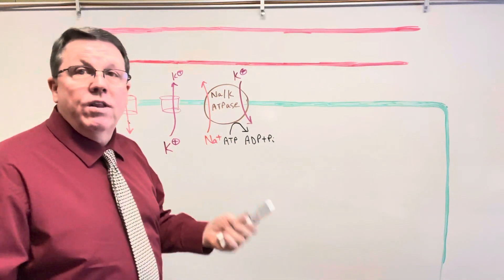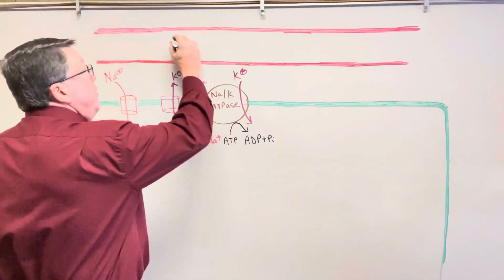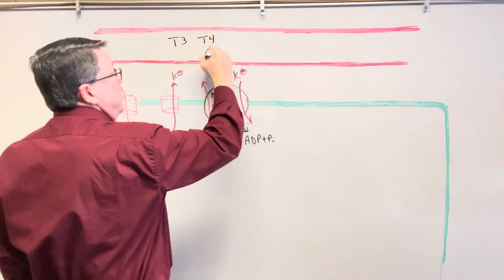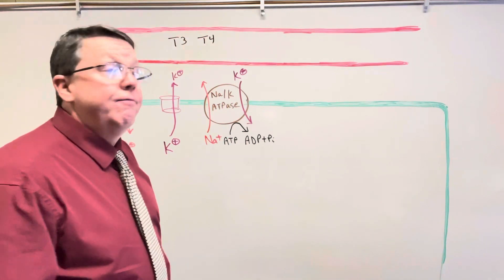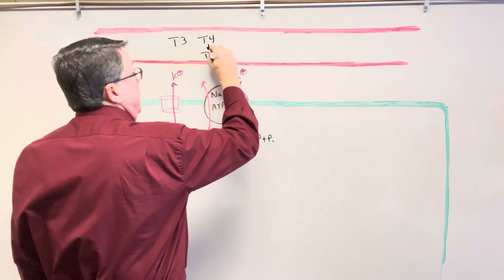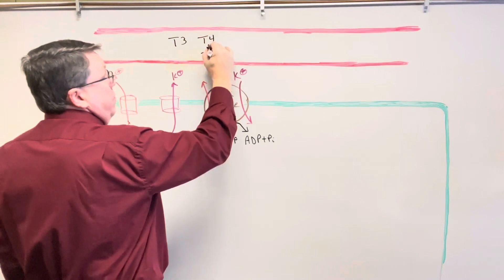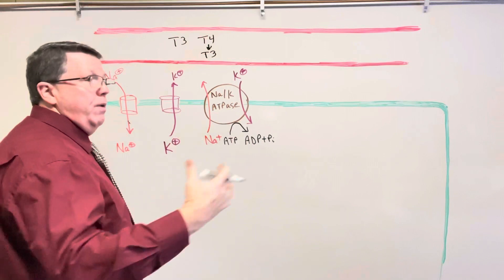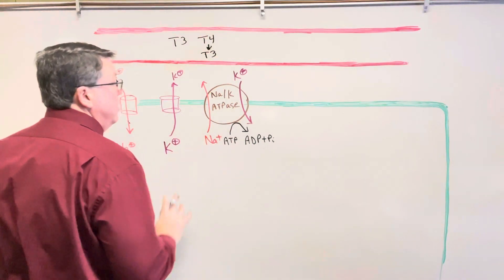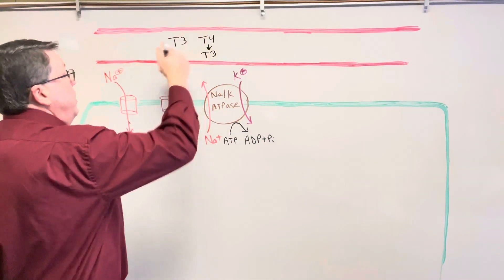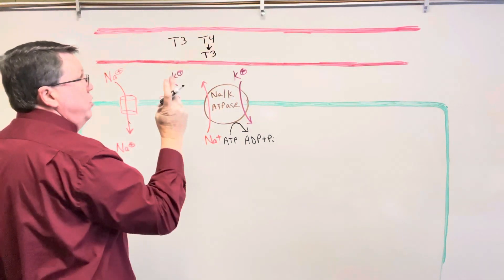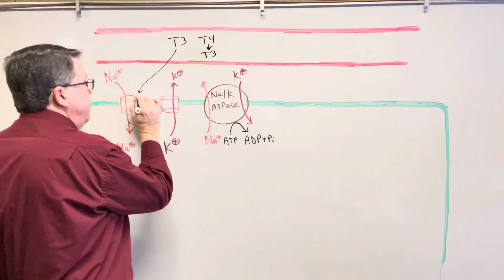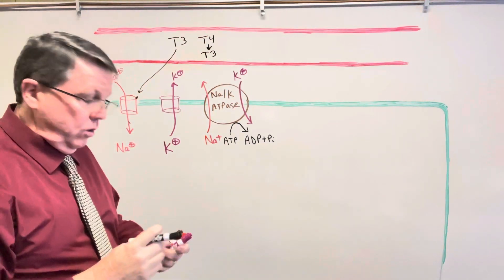Now let's talk about what thyroid hormone does. Thyroid hormone can be in two forms: we have T3 and basically the inactive form, which is T4. A lot of the T4 is going to be converted to T3 in the bloodstream. Whatever is not converted in the bloodstream is going to come down into the cell and then be converted to T3, or bond with a protein until it's needed. The T3 is going to have two different effects.